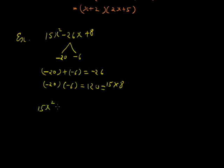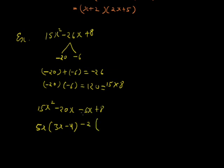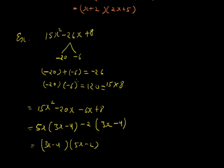So 15x squared minus 26x plus 8 can be written as 15x squared minus 20x minus 6x plus 8. From the first two terms, we take 5x common, leaving 3x minus 4. From the next two terms, to make the coefficient of x positive, we take minus 2 common: minus 6x divided by minus 2 gives 3x, and 8 divided by minus 2 gives minus 4. So 3x minus 4 is common in both terms. Taking 3x minus 4 common leaves 5x minus 2. So 15x squared minus 26x plus 8 equals 3x minus 4 into 5x minus 2.